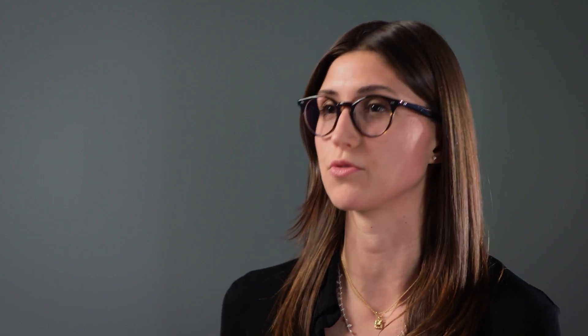Heiner Bastin writes in the artist's catalogue raisonné that Twombly paints what should be written, and on the surface of Untitled we see this magnificent duality between writing and painting unfold.